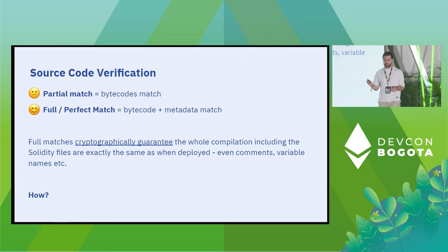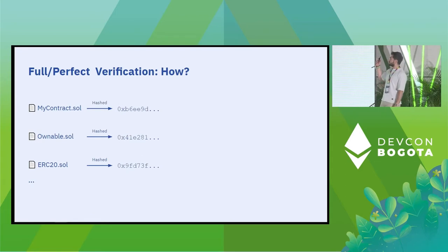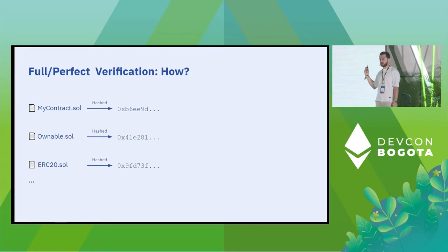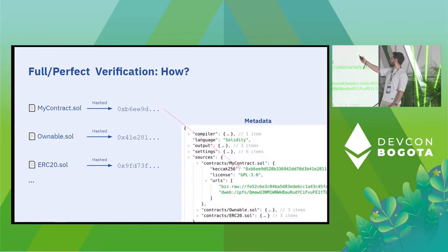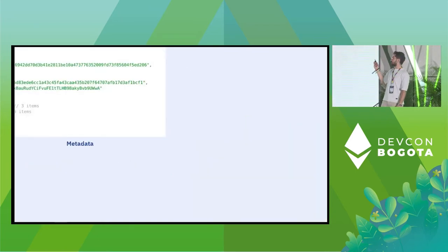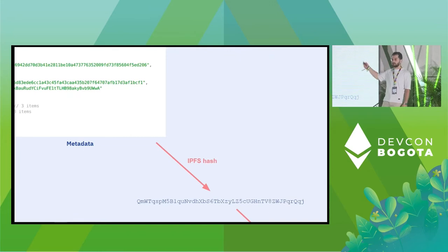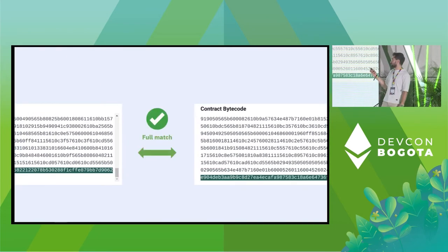Let's see how this actually works. When you compile your contract, the compiler takes the hash of each Solidity file. The hashes of these files are embedded inside the metadata file, along with the other sources. Then the compiler takes the IPFS hash of the whole metadata file, and that IPFS hash is embedded at the end of the bytecode. If these match, it's a full match.